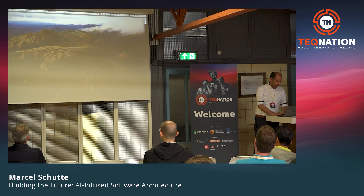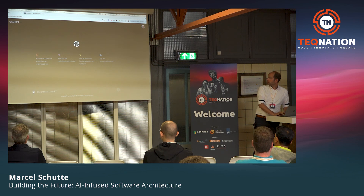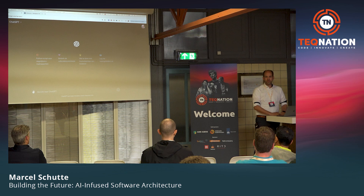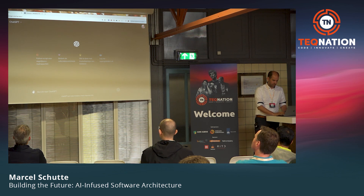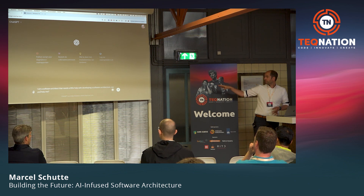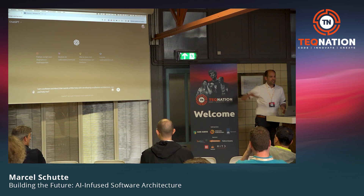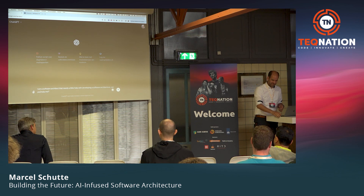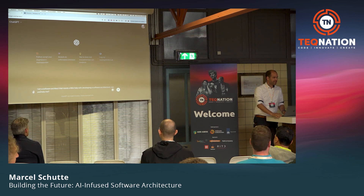I'll be using ChatGPT for this demo. I prepared my prompts in advance so I can just copy them in rather than typing everything live. The first prompt is very short: 'I'm a software architect that needs a little help with developing a software architecture, can you help me?' Just a small question — be nice to it, ask it politely. Don't just tell it to do something, just ask.